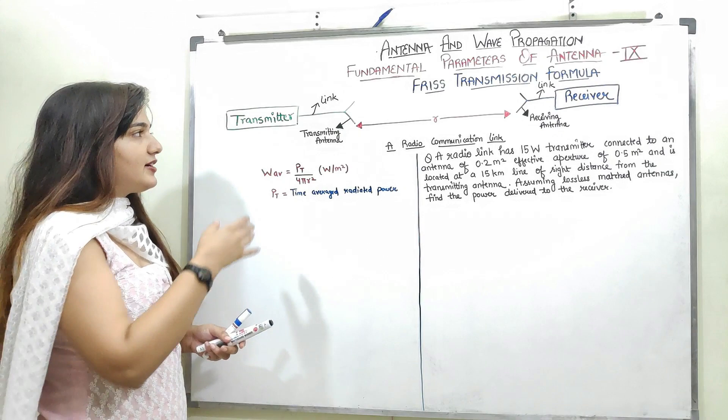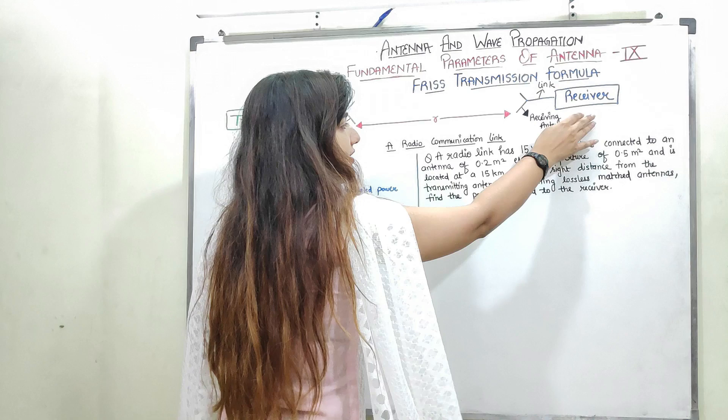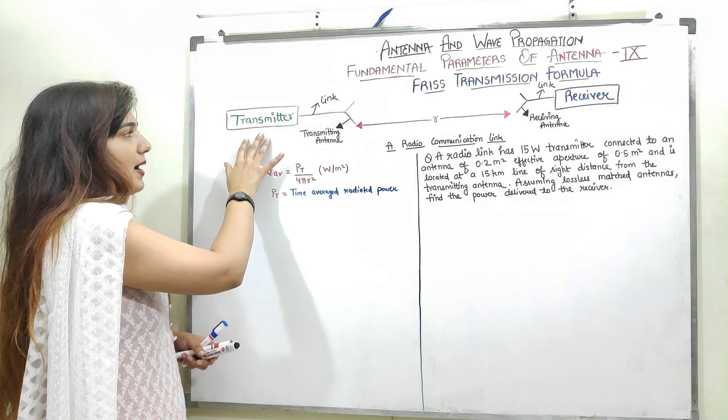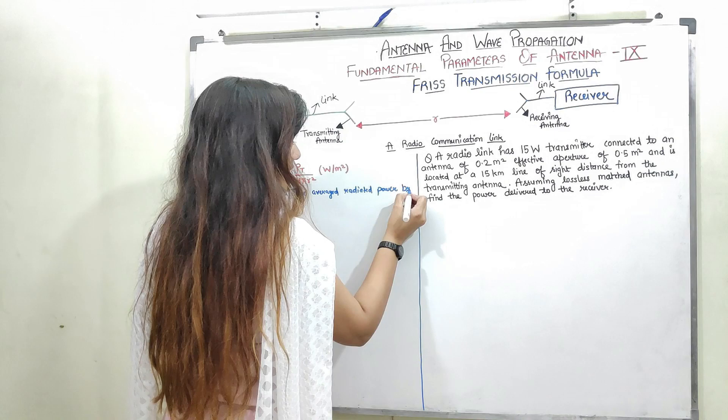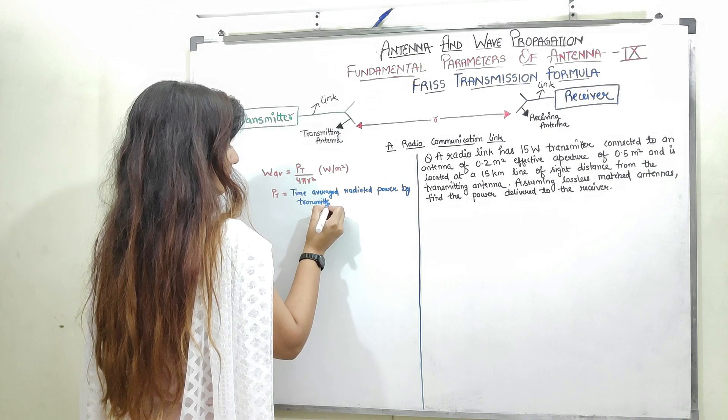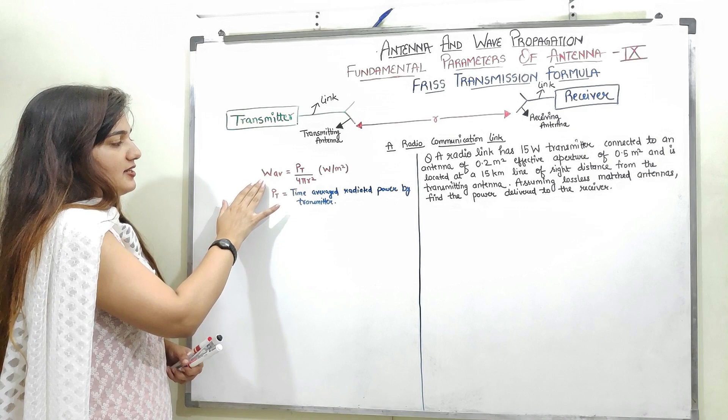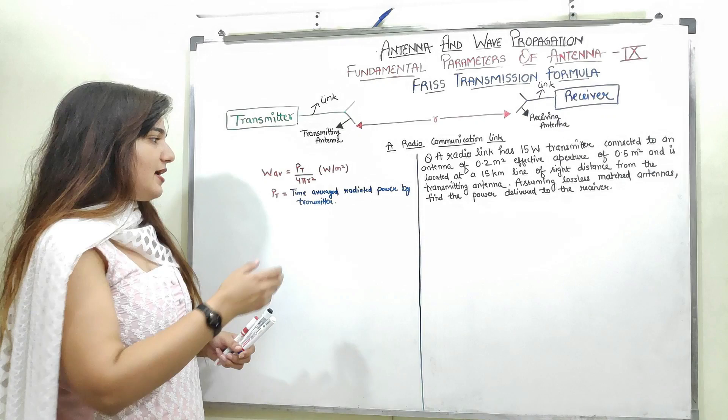After these things, I can find out the power received at the receiving terminal. PT represents the time average radiated power by the transmitter. I know that the power density is represented by W average, and the power density is defined by time average radiated power divided by the area.